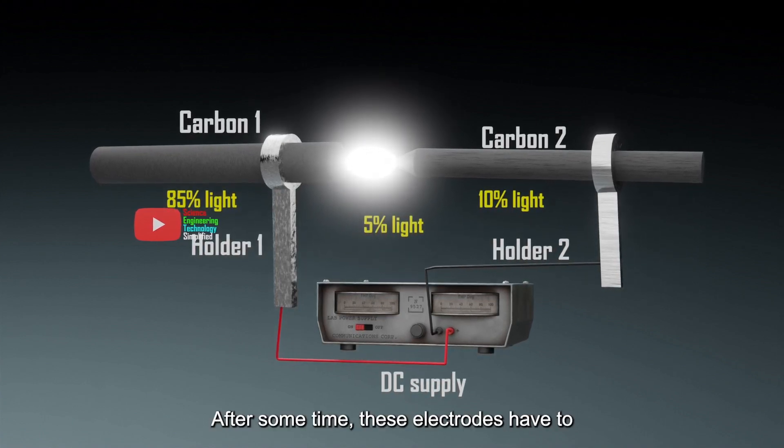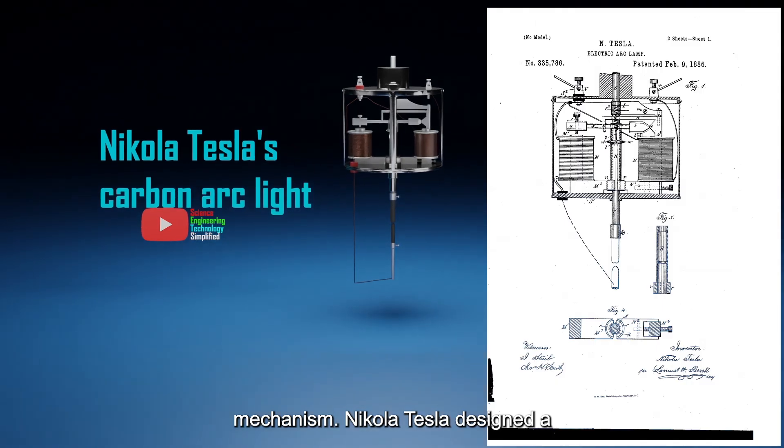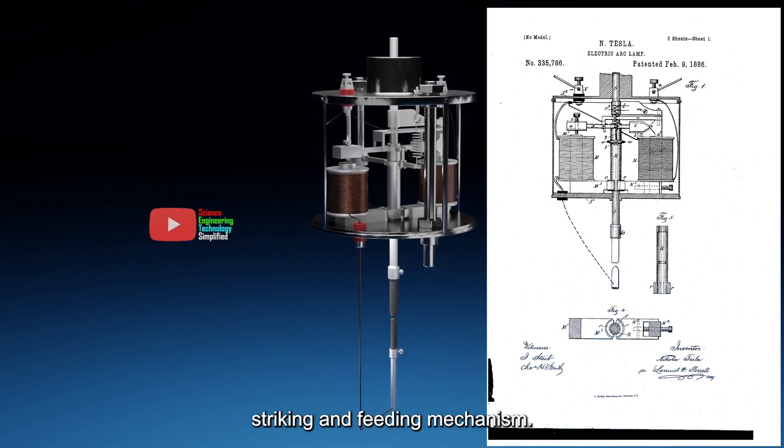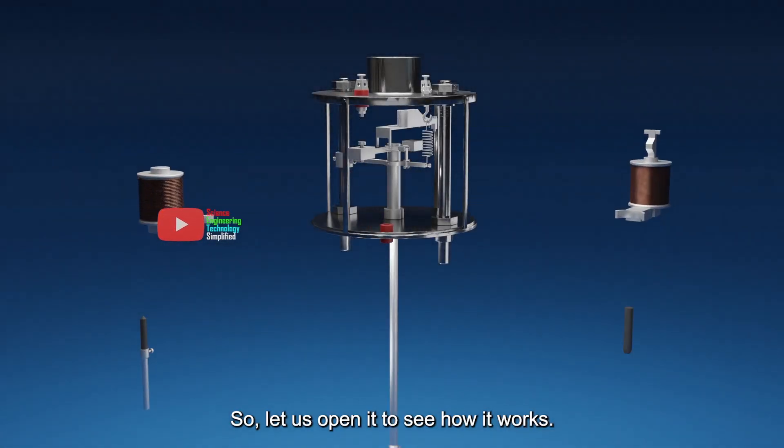After some time, these electrodes have to be readjusted again manually by some mechanism. Nikola Tesla designed a carbon arc light with an automatic striking and feeding mechanism. So, let us open it to see how it works.